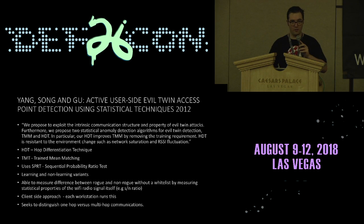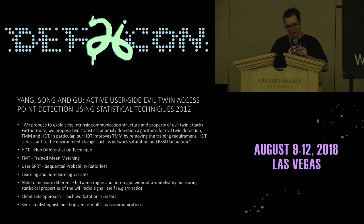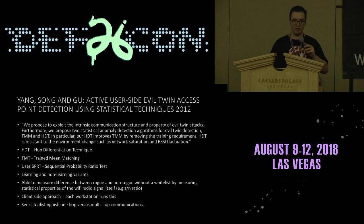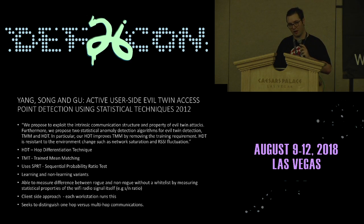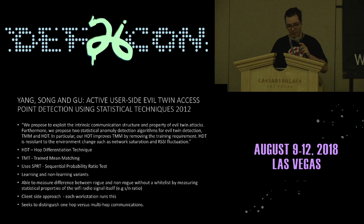The first paper we'll talk about is Yang, Song, and Goo from 2012: "Active User-Side Evil Twin Access Point Detection Using Statistical Techniques." This is the first thing that came close to both me and Gabe's idea. It's not quite machine learning — it's statistics — but sometimes that's the same thing. Bayesian statistics could be machine learning, right?